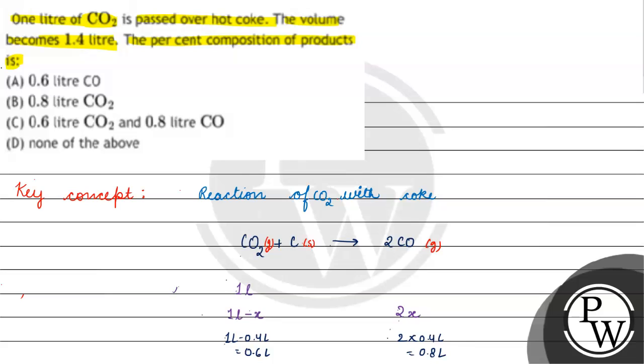The correct answer for this question will be option C. Percent composition of products will be 0.6 liters of CO2 and 0.8 liter of CO. I hope you understood it well. Thank you and all the best.